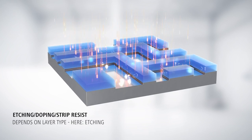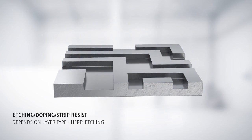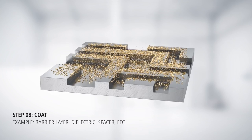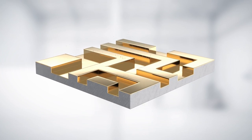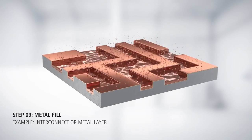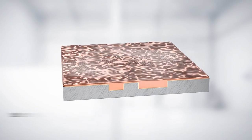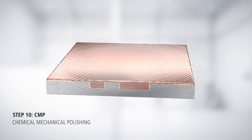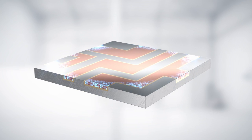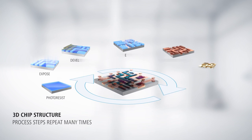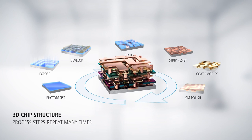Etching forms the resist structure on the wafer. Further processing steps include, for example, the application of barrier layers and copper filling to provide the wiring between transistors. The surface is planarized by polishing. Similar processes are repeated to create the full three-dimensional chip structure.